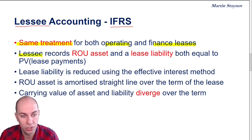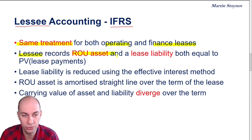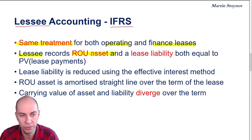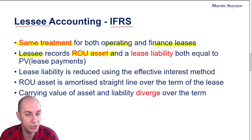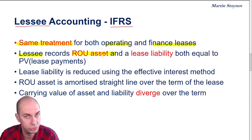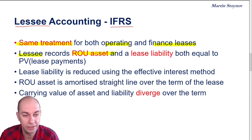The lessee is going to record an ROU asset. ROU stands for right of use asset. So we remember, this is not our asset, but it is an asset that we have the right to use for a period of time — like a car lease. That's recorded on the left hand side of the balance sheet.